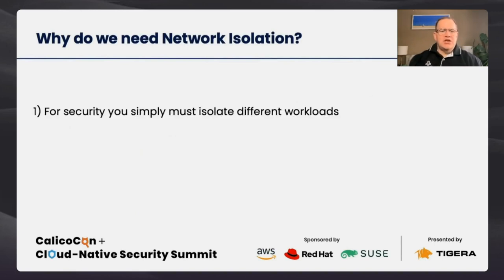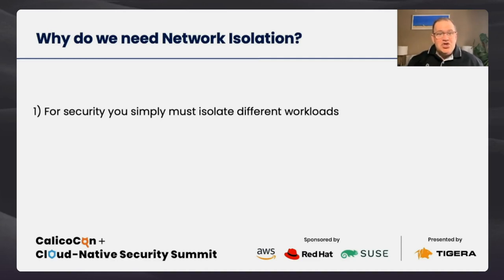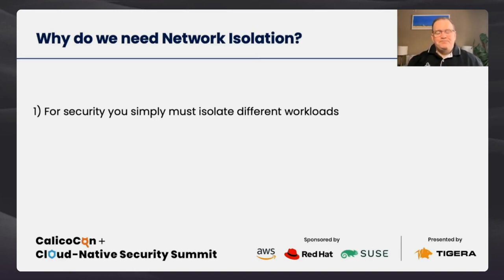So why do we need network isolation? For security — you really should isolate your network. For a simple demonstration: what happens if you install your top secret application in a top secret namespace, and then someone comes along and installs a hacker application in a hacker namespace? The problem is that Kubernetes by default does not automatically deny any traffic between namespaces, which means the hacker application can happily talk to the top secret application. In the virtualization and physical server world, we always had isolation for different purposes.